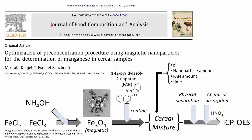This article is from the Journal of Food Composition and Analysis, titled 'Optimization of Preconcentration Procedure Using Magnetic Nanoparticles for the Determination of Manganese in Cereal Samples.' Cereal samples such as flour, barley, and rice contain manganese they get from the environment. Manganese in higher concentrations can be toxic to humans, so it's important to measure its content in these cereals to make sure they're at a safe level. One problem is that the content is usually very low, requiring a pre-concentration procedure to concentrate the sample enough to measure it using ICP.